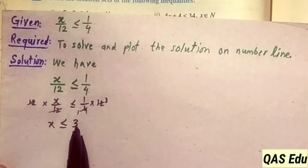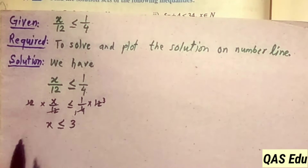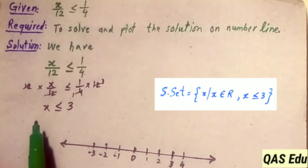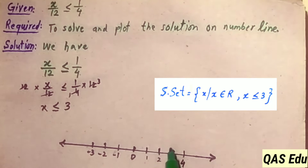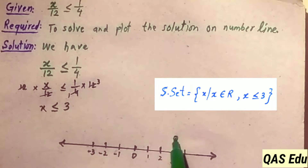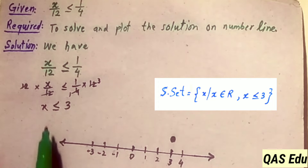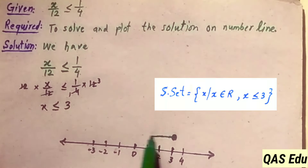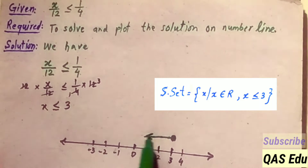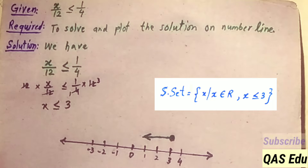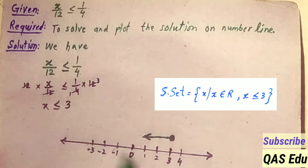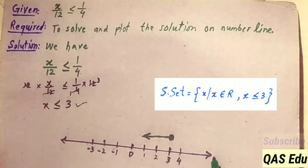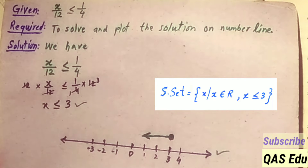Since x is equal to 3 or less, 3 will be included in the solution. If we have a limit to the values, this is the arrow drawn. The values are represented, and this is the solution set and the solution drawn on the number line.